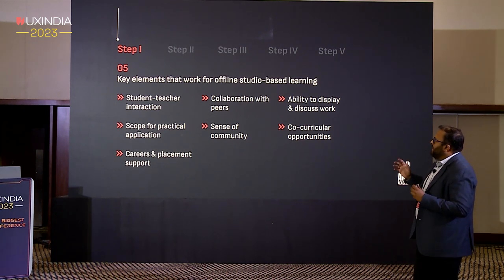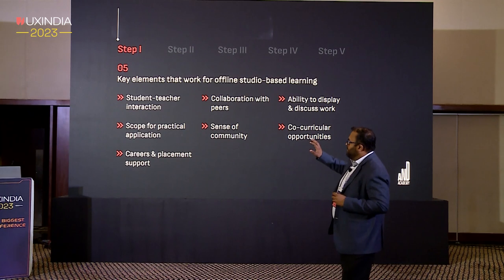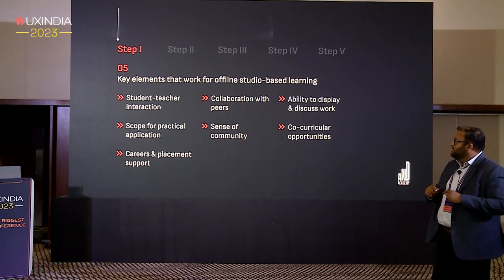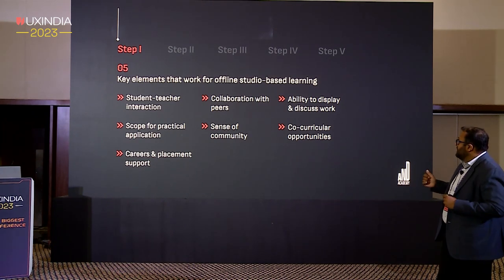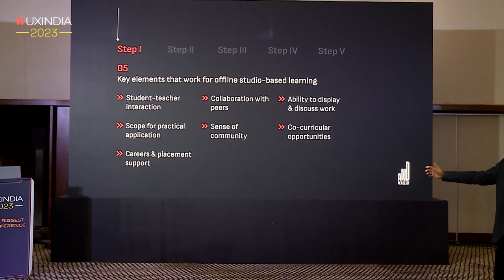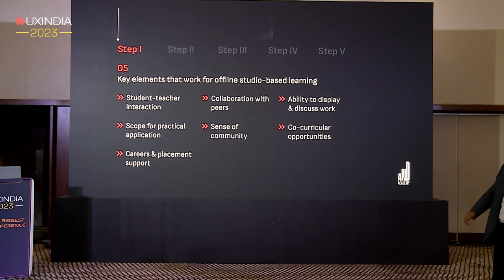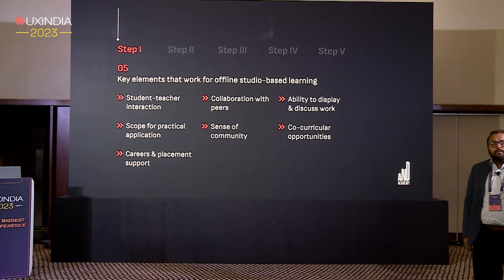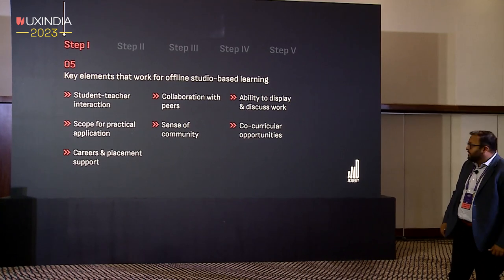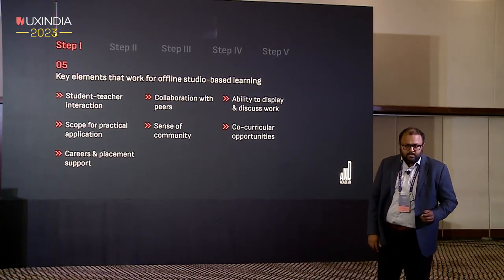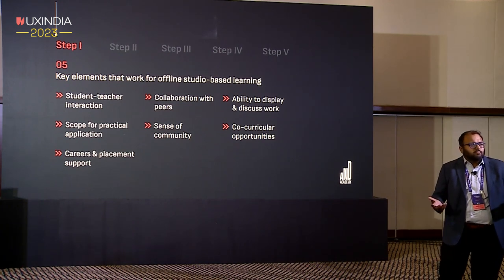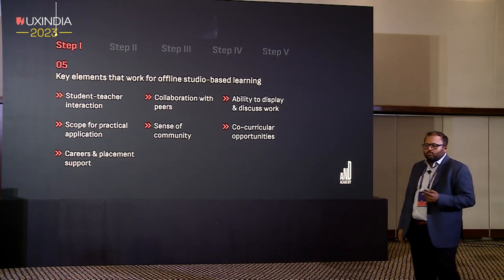We arrived at seven key elements that make offline learning effective. These are: student-teacher interaction; student-student collaboration with peers; the ability to discuss and display your work in a studio and receive feedback; scope for practical application through projects and portfolio building; a sense of community; co-curricular opportunities; and career services. These are the standard ingredients of the offline model that, when done well, produce a wholesome learning experience.